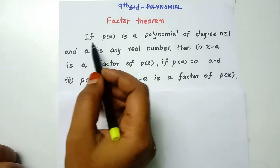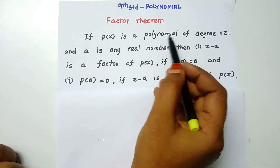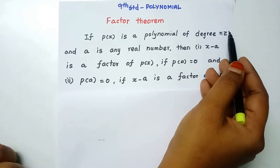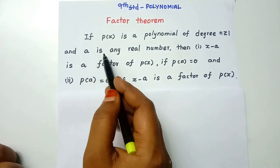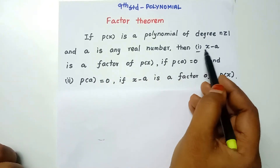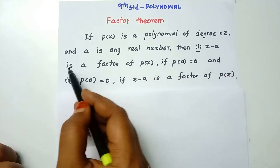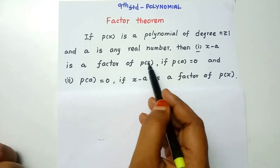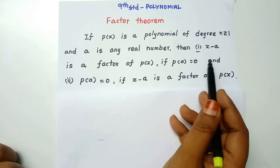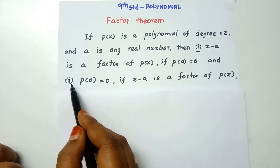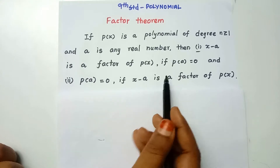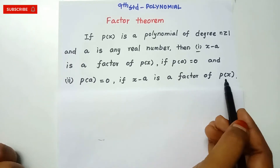If P(x) is a polynomial of degree n, where n is greater than or equal to 1, and a is any real number, then: Point 1 — x minus a is a factor of P(x) if P(a) equals 0. And Point 2 — P(a) equals 0 if x minus a is a factor of P(x).